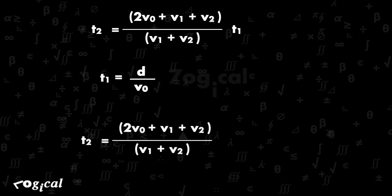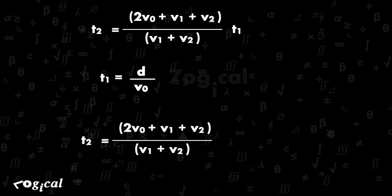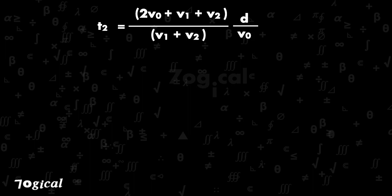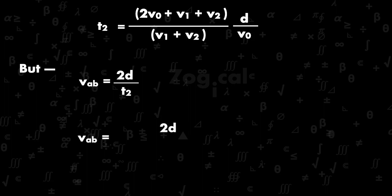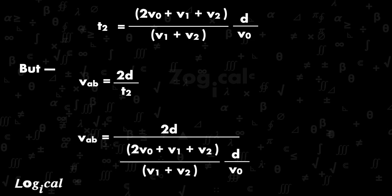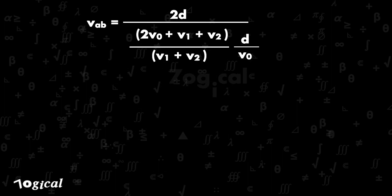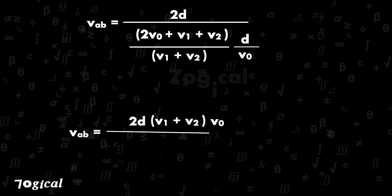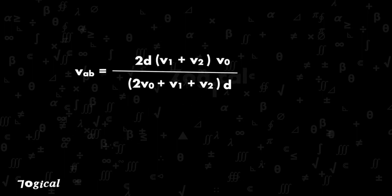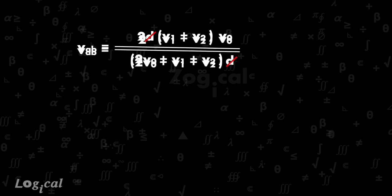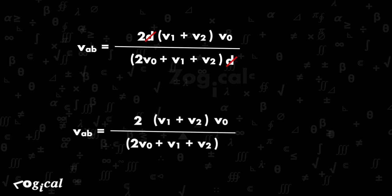Substituting the value of t2 and simplifying, V_AB = 2d(v1 + v2) * v0 / [(2v0 + v1 + v2) * d]. The d cancels, giving the final answer: V_AB = 2v0(v1 + v2) / (2v0 + v1 + v2).